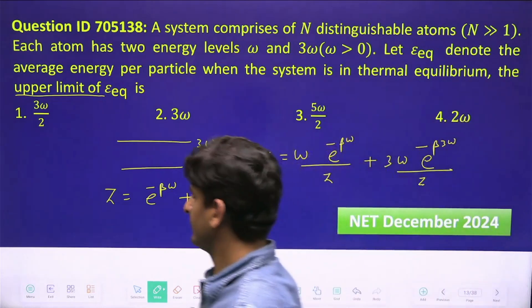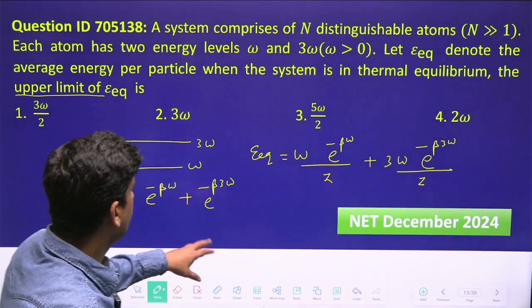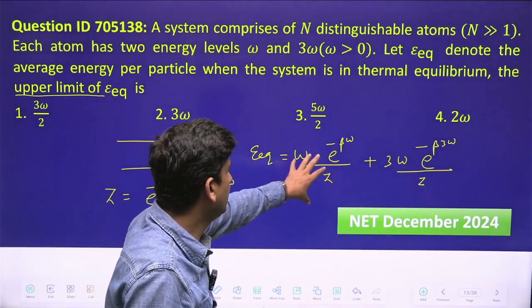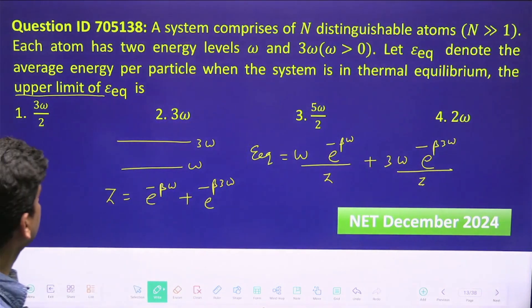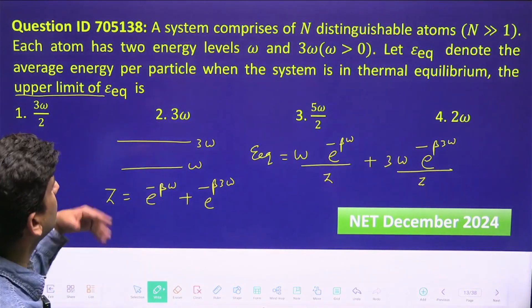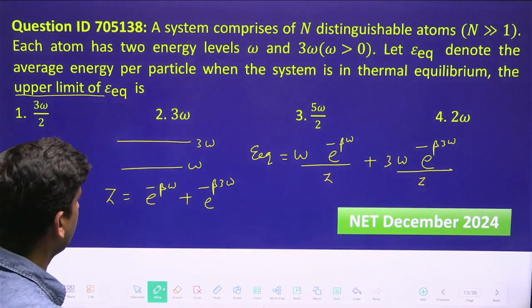This is how we write the average energy - energy times probability of being there, then again energy and probability of being there. This is the average energy and I have to see the upper limit.